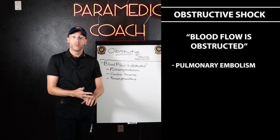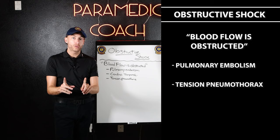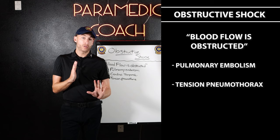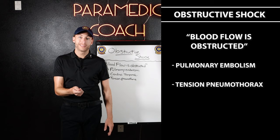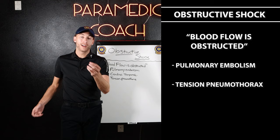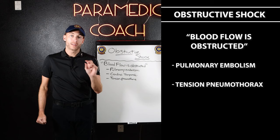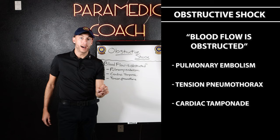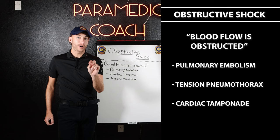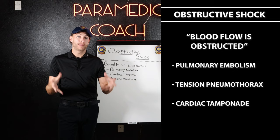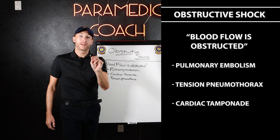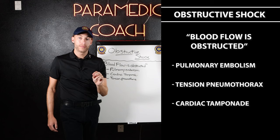Another cause of obstructive shock is tension pneumothorax. What happens is pressure builds to a point where it can obstruct heart blood flow and squeeze the heart. Since the pneumothorax was the culprit — not the heart — it's obstructive. Similarly, cardiac tamponade: pressure around the heart squeezes it. It's not the heart's fault. It's an outside force obstructing blood flow. That is obstructive shock.